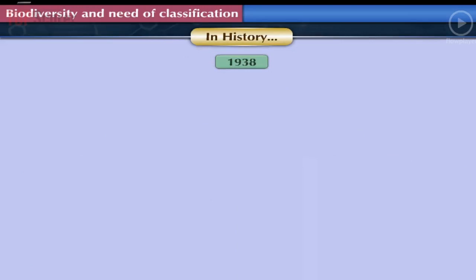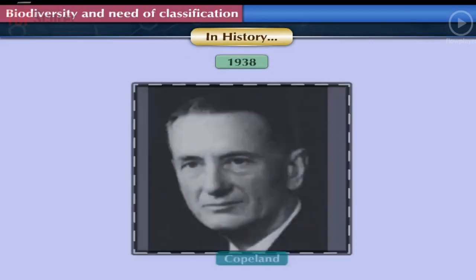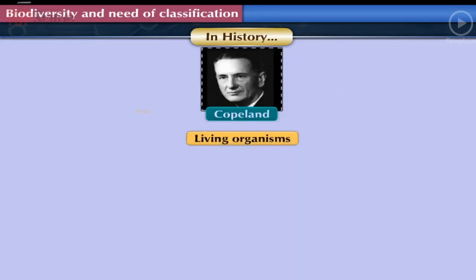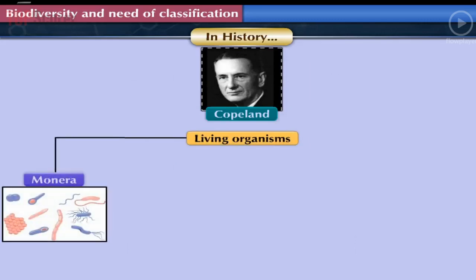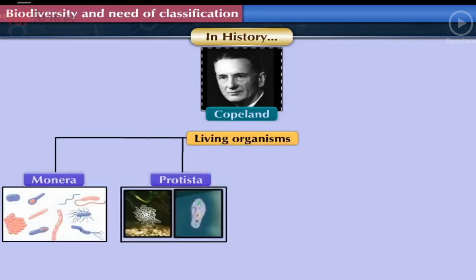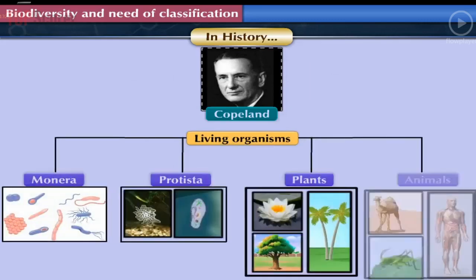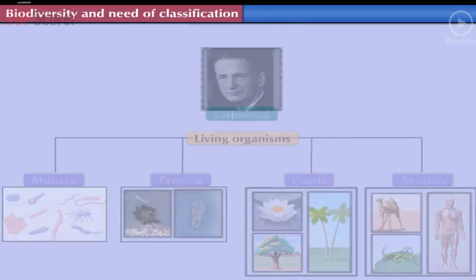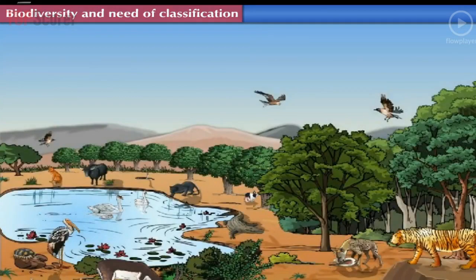In 1938, Copeland divided living organisms into four kingdoms: Monera, Protista, Plants, and Animals. Let us now move on to study about the system used for classification of living organisms.